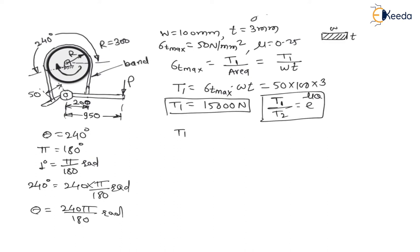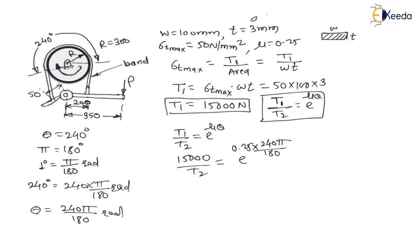With the formula T1/T2 = e^(μθ), putting values: 15,000 / T2 = e^(0.25 × 240π/180). Solving for T2, the minimum tension is found to be 5,263 Newton. This is the minimum tension.